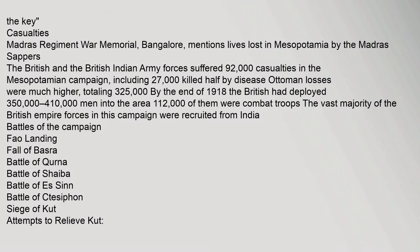The British and the British Indian Army forces suffered 92,000 casualties in the Mesopotamian campaign, including 27,000 killed — half by disease. Ottoman losses were much higher, totaling 325,000. By the end of 1918, the British had deployed 350,000 to 410,000 men into the area, 112,000 of them combat troops. The vast majority of the British Empire forces in this campaign were recruited from India.